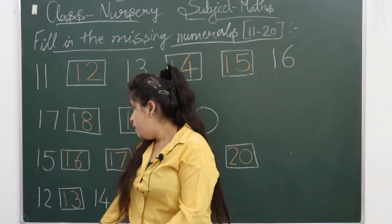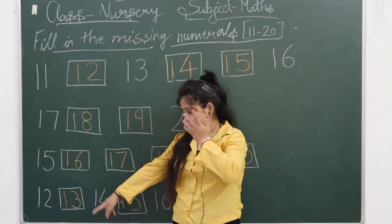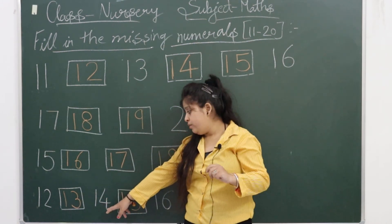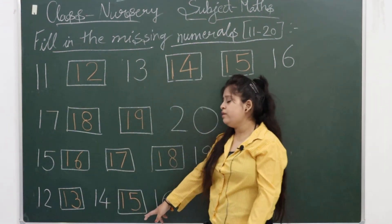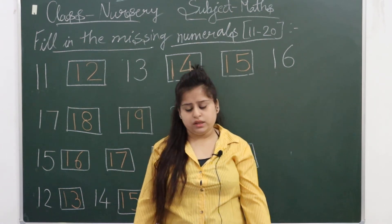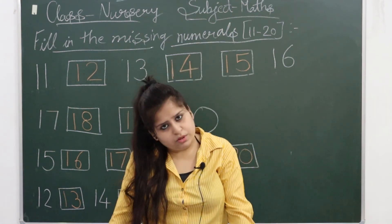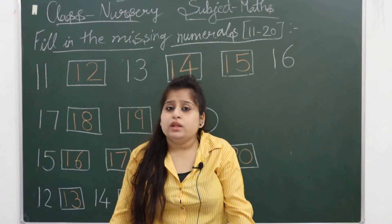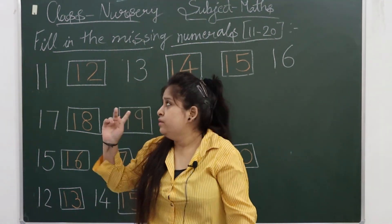So what is our last series? 1-2 twelve, 1-3 thirteen, 1-4 fourteen, 1-5 fifteen, and 1-6 sixteen. I hope you have understood. We are done with the activity: fill in the missing numerals, 1 to 20. We did it separately - 1 to 10, and then 11 to 20.